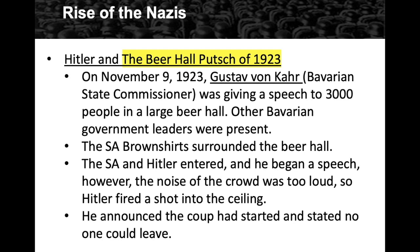He was also inspired by Mussolini's march on Rome a year earlier. On November 9th, 1923, Gustav von Kahr — the Bavarian State Commissioner, essentially the governor — was giving a speech to 3,000 people in a large beer hall, with other Bavarian government leaders present. Hitler decided this was the moment. He had the SA Brown Shirts surround the beer hall, then SA soldiers came in with Hitler. But Hitler could not be heard over the noise of the crowd, so he fired a pistol shot into the ceiling to get everyone's attention and announced the coup had started.